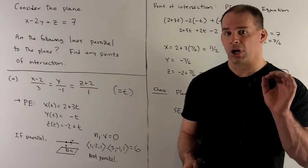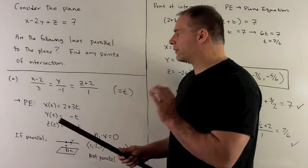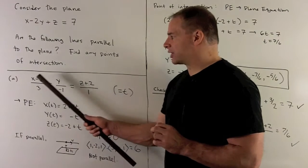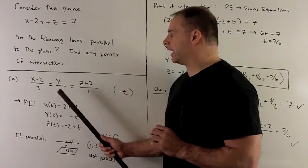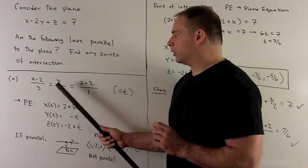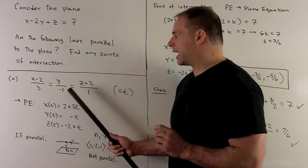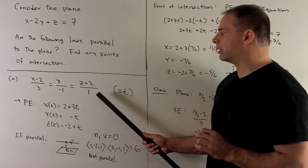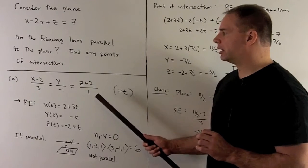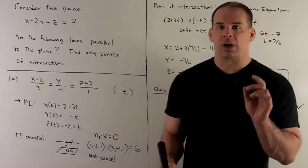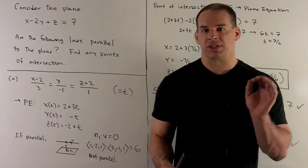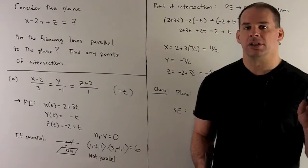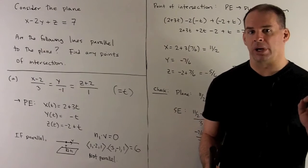First line, in symmetric form, it's given by (x minus 2) over 3 equals y over minus 1 equals (z plus 2) over 1. We can't work with this in symmetric form, so we want to convert to parametric equations.